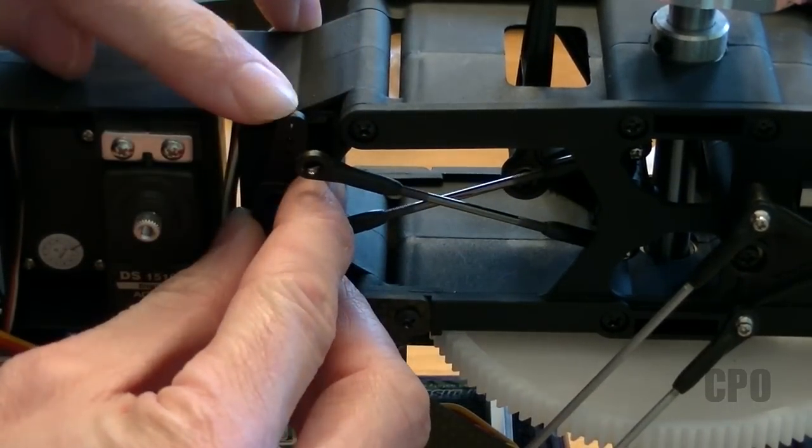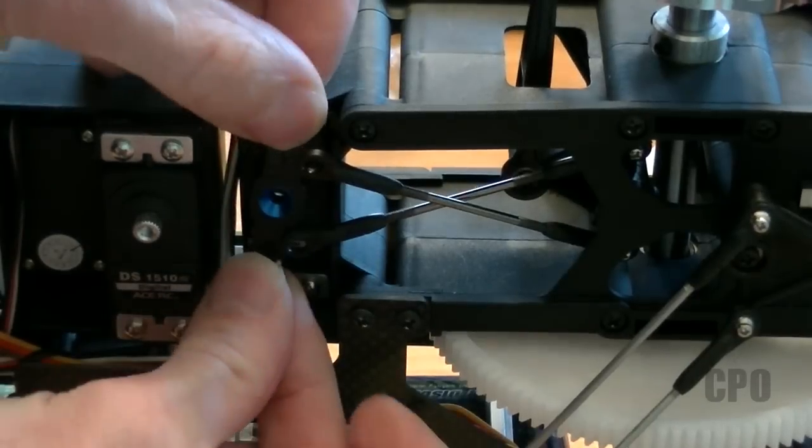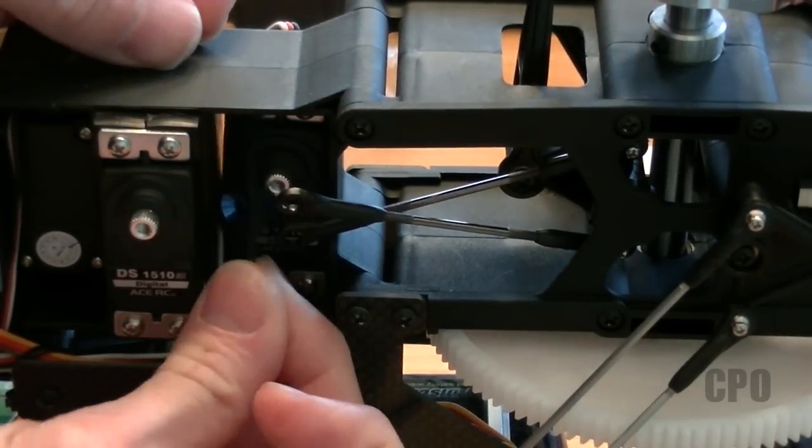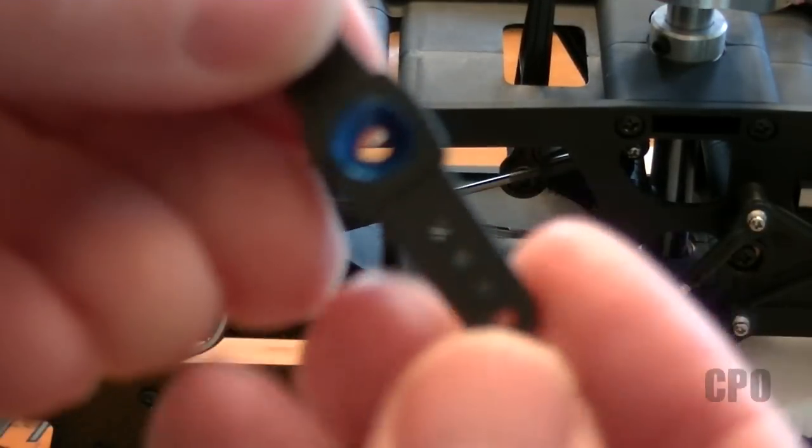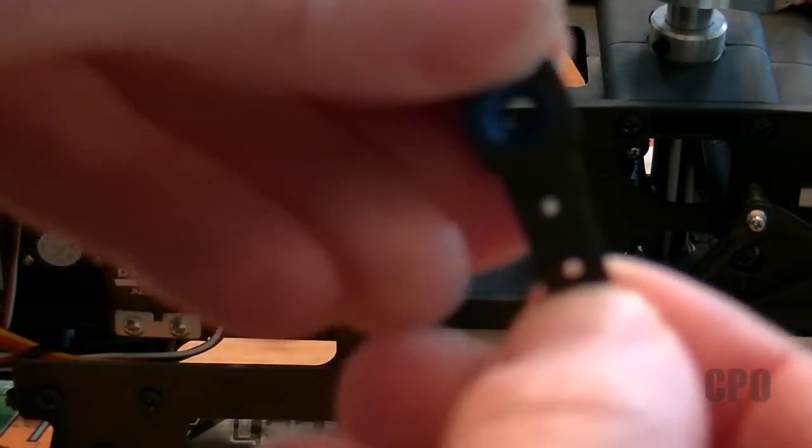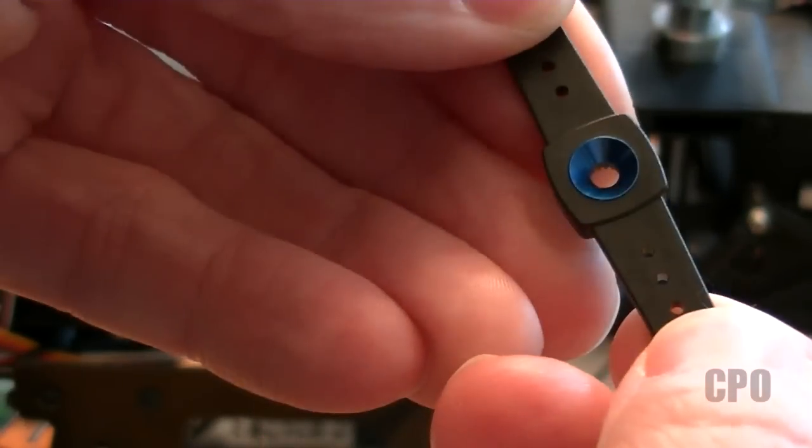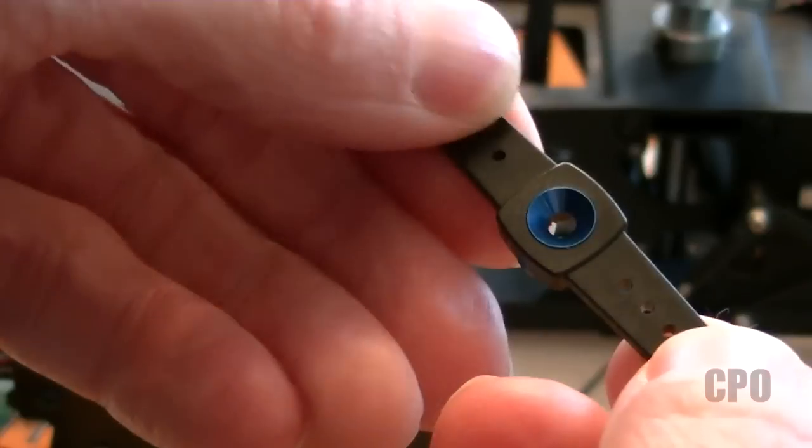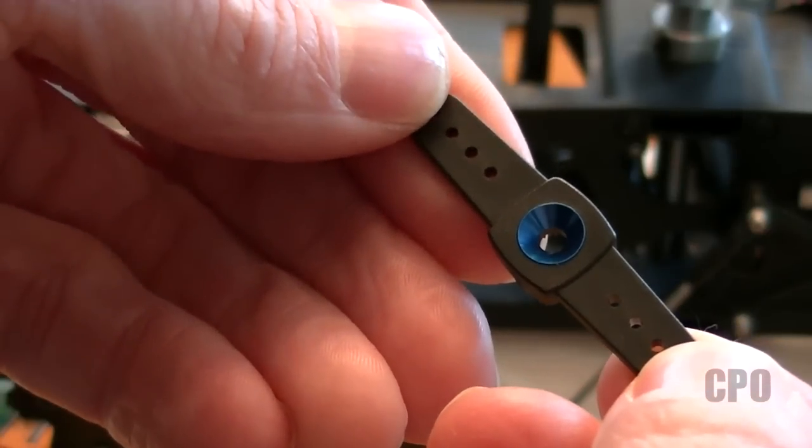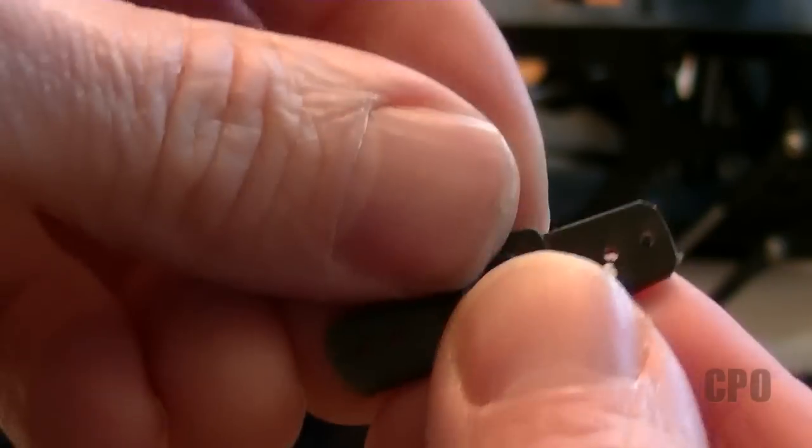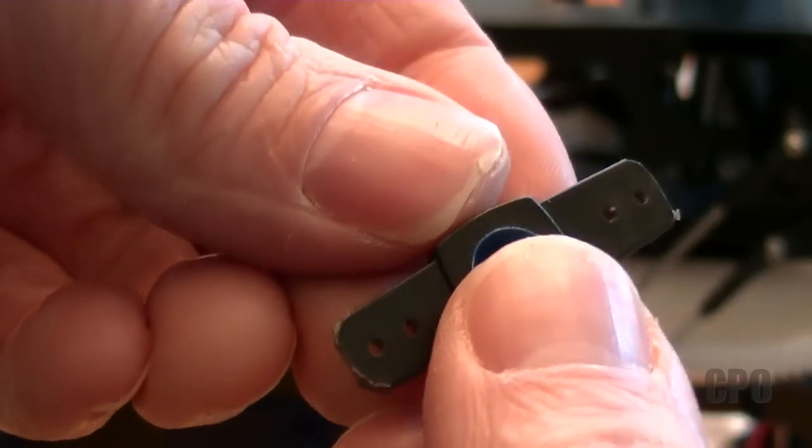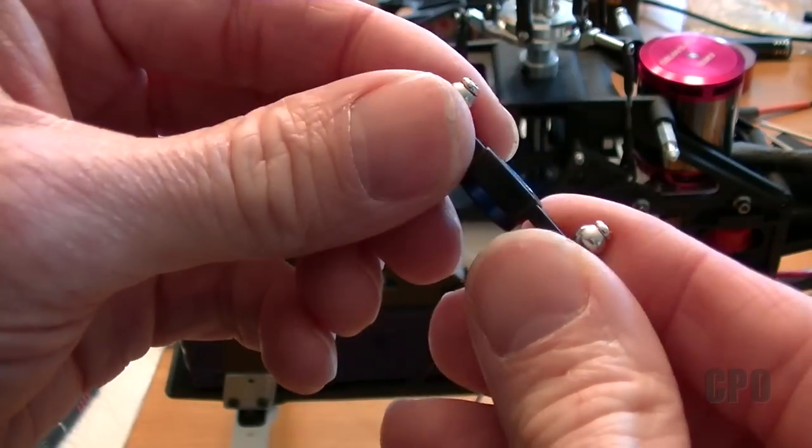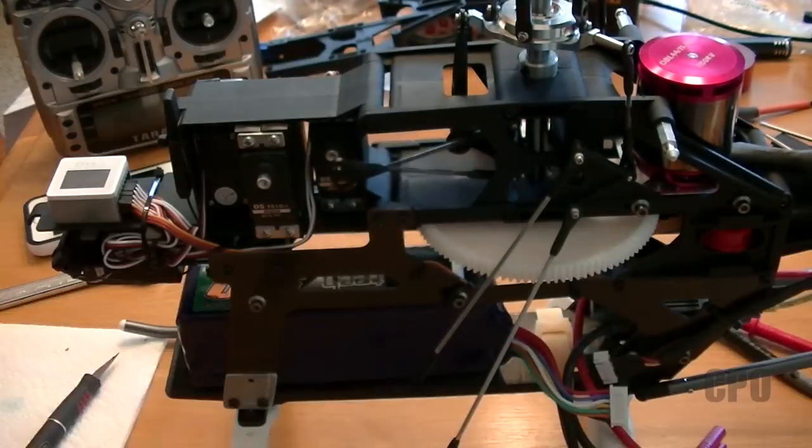Back to the servo horns. We have one other challenge - the elevator servo is recessed into the frame, so the full size servo horn doesn't fit in that area. We're going to need to cut it down to fit. Since we're using the second holes on the arms we just need to cut above that. I'm going to cut it right at the third hole mark. I used a pair of side cutters and a little bit of sandpaper to trim it down.